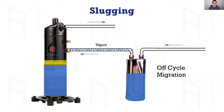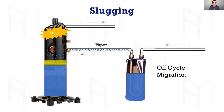If that compressor is cold or the crankcase heater is not working, it's very important to understand that when refrigerant travels back into the compressor, it'll condense in that oil. When that compressor starts up, you get a slug, which can break the flanks. The scroll set has flanks — the walls are called flanks — and when the compressor tries to compress oil or liquid refrigerant, it breaks those flanks.